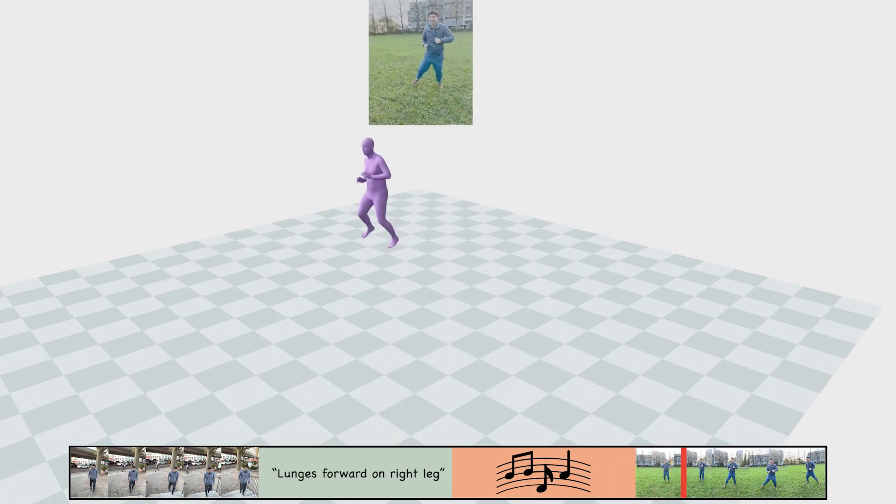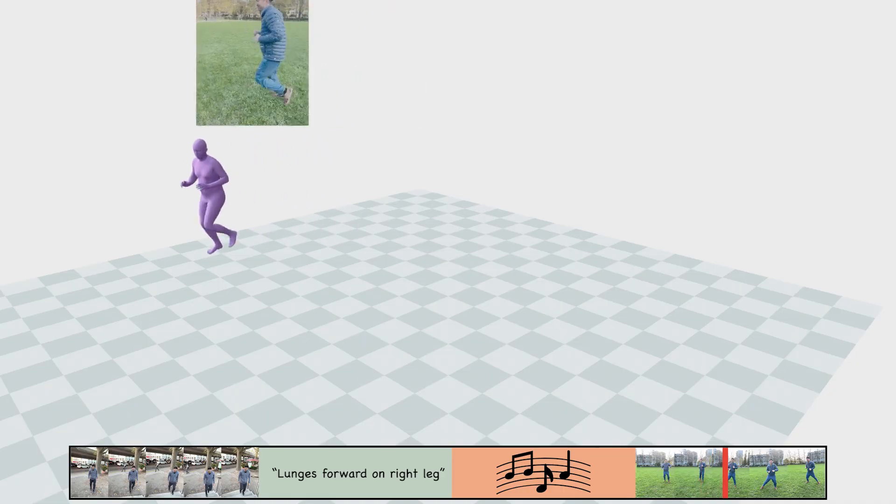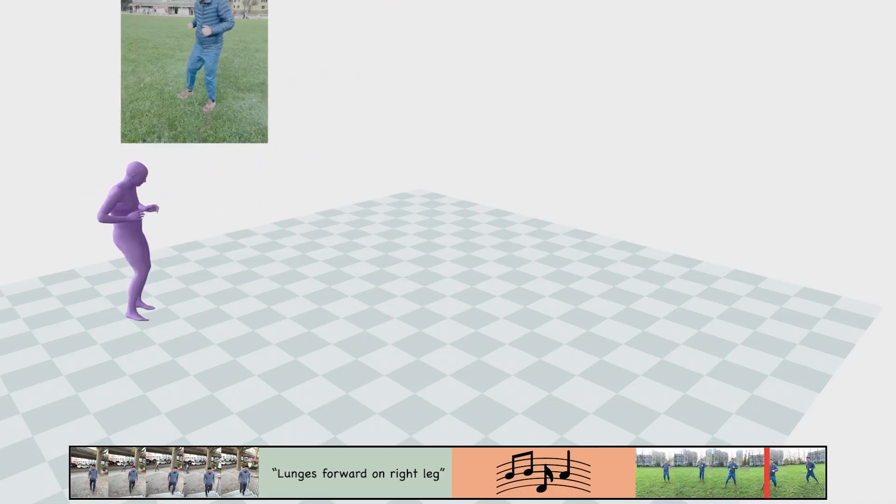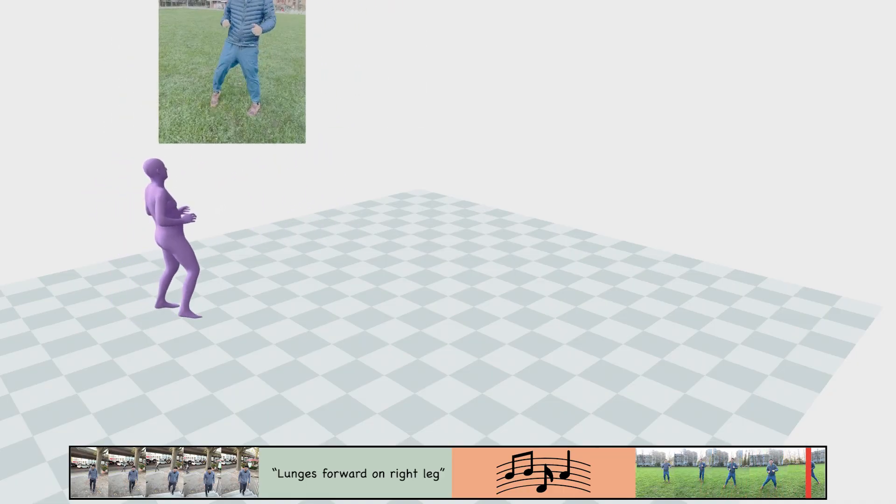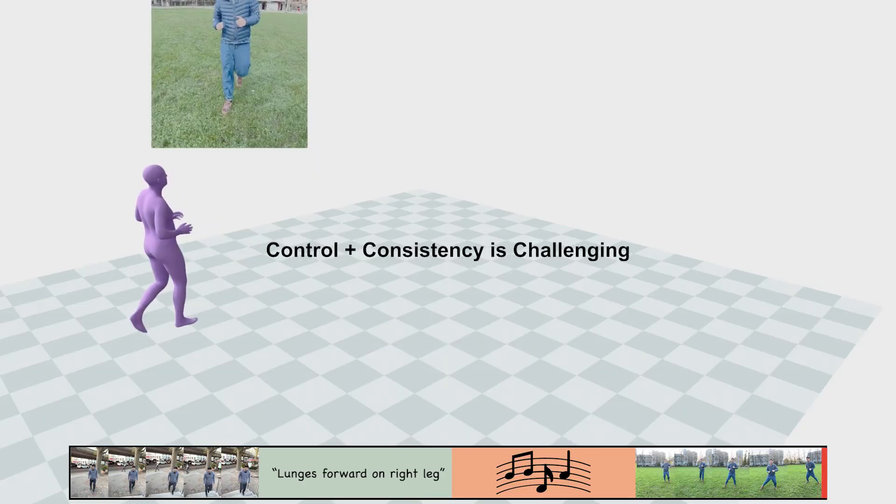The generated motion must precisely replicate the human motion in the videos while accurately reflecting the text and music in between. Achieving this level of control and consistency is challenging with existing generative methods.